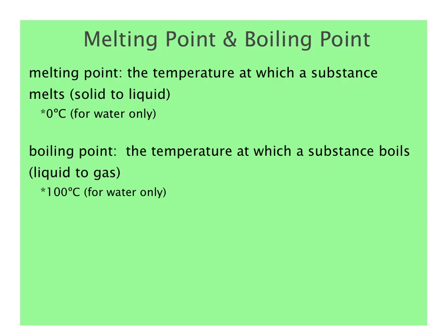Melting point and boiling point are simply the temperatures where phase changes occur. For water, zero degrees Celsius is the melting point and 100 degrees Celsius is the boiling point, but these are unique to water — different substances have different melting and boiling points. In fact, melting point and boiling point are one way to identify substances because they are unique to each substance.